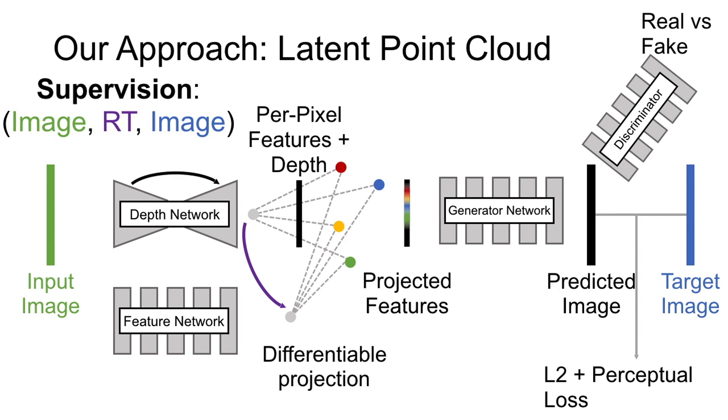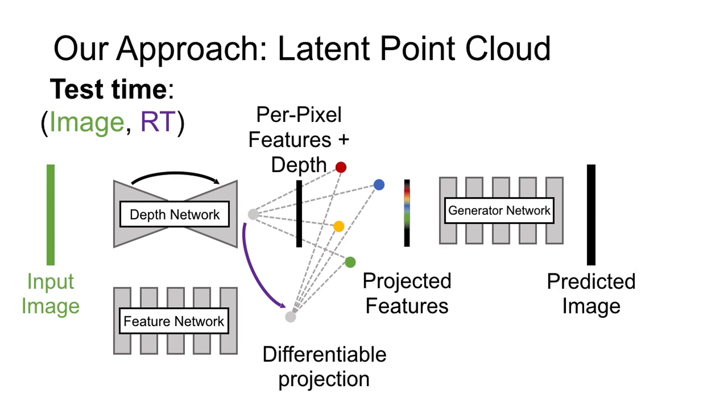The depth and feature networks are trained end-to-end using our differentiable point cloud renderer. At test time, we don't need the target image for the loss. We only take as input an image and desired new viewpoint. This is passed through the network to generate a new image of the scene at that new viewpoint.